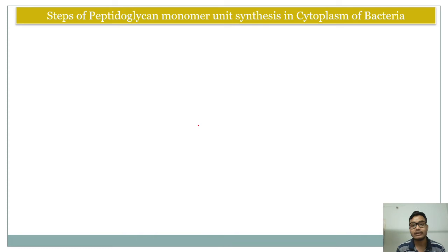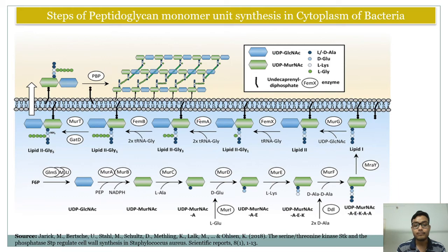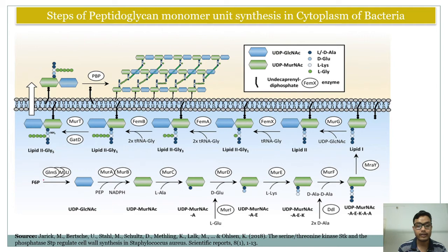How is peptidoglycan synthesized in a bacterium? Each component required for peptidoglycan formation is first formed in the cytoplasm of the bacteria. After that, a transporter molecule known as bactoprenol helps the individual components — NAG and NAM — move outside of the cell membrane to ultimately form the peptidoglycan layer.